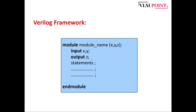After that we just need to write the statements, and these statements are nothing but the functionality of the circuit. They can be written in terms of behavioral modeling, data flow level, gate level, or switch level. Last but not least, the semicolon represents the termination of a statement, so it is very important to terminate a line. This is all about the basic framework of Verilog code.